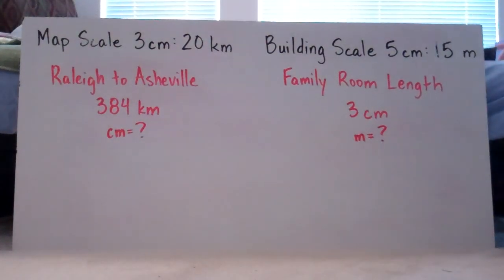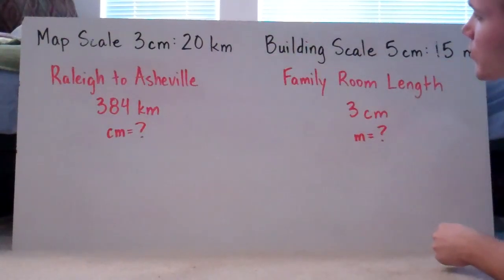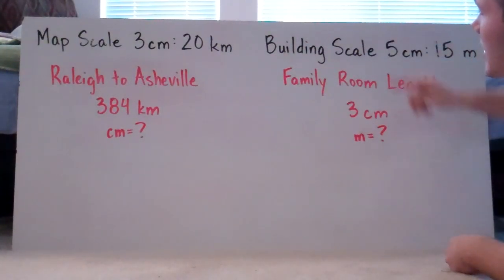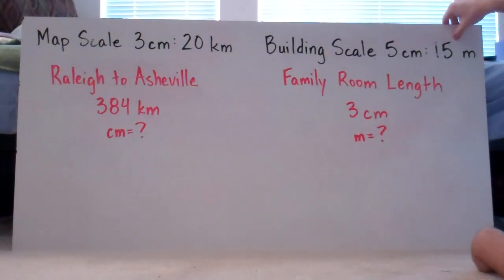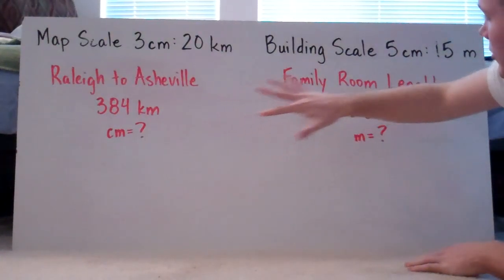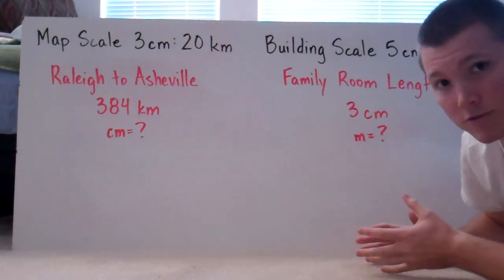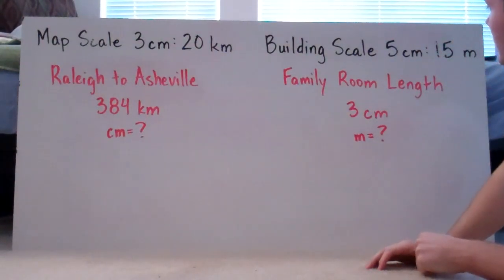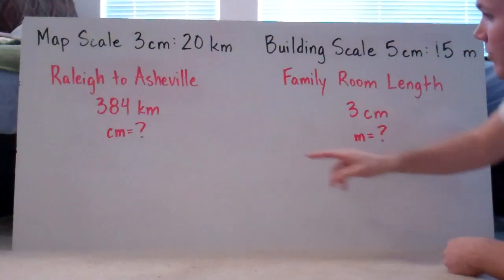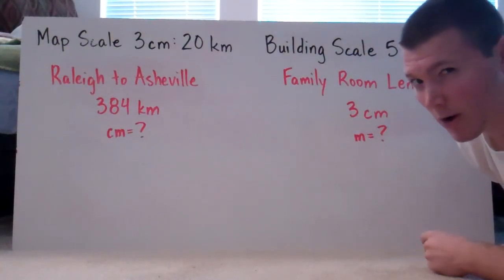Now try these two problems. Map scale: three centimeters equals 20 kilometers. Building scale: five centimeters equals 15 meters. Write all this down and try to solve for the missing values by setting up two ratios. Pause the video, get started, and I'll be right back.